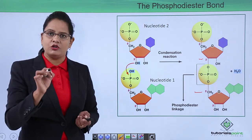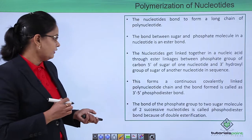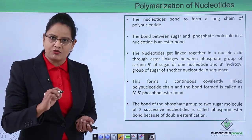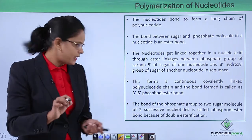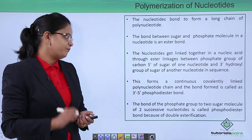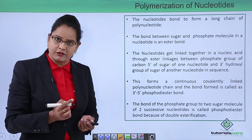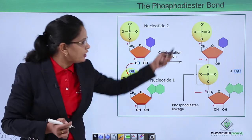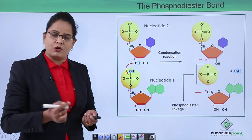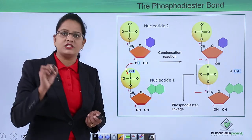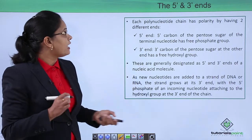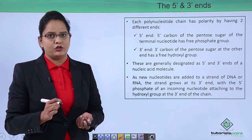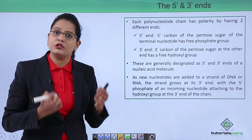A continuous, covalently linked polynucleotide chain is formed, and the bond is a three prime–five prime phosphodiester bond. One phosphate molecule joins to two nucleotides with two ester bonds, therefore it is known as a phosphodiester bond. This phosphodiester bond leads to polarity in the polynucleotide chain.